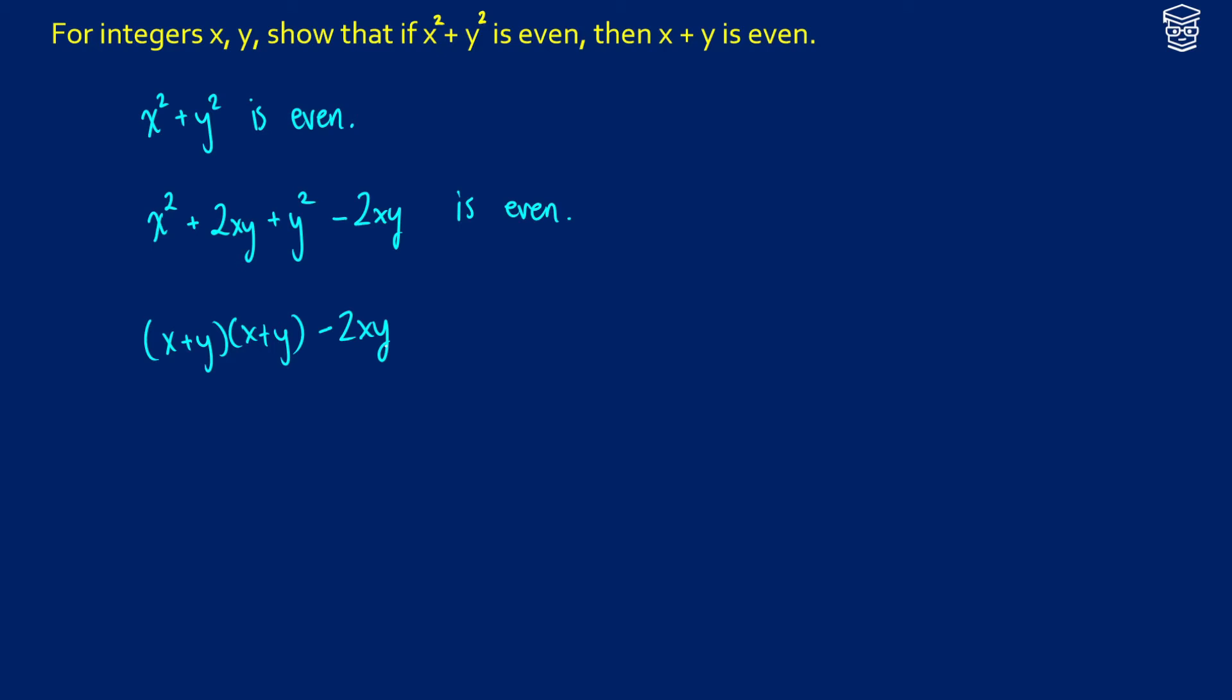Now, what do we know about this? Well, if the original is even, and we're subtracting something that is 2 times something, it's still going to be even as well. So this expression is even.